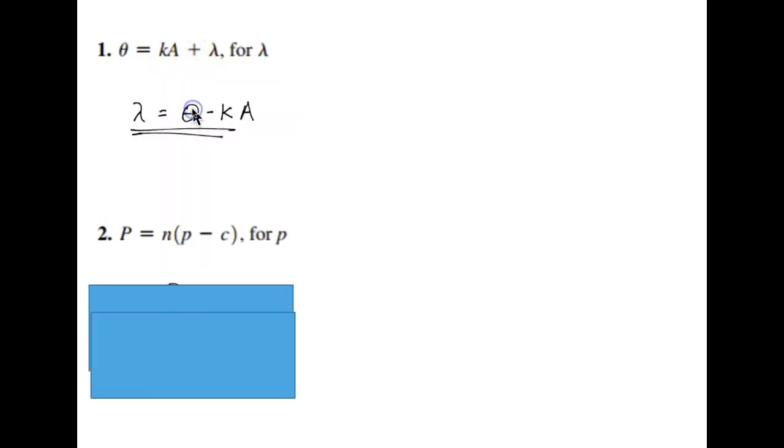And to get rid of, since it's been added to lambda, we need to subtract. So we're going to subtract that from both sides. So that means our lambda is actually equal to theta minus ka or kappa alpha, if you want to go all Greek.